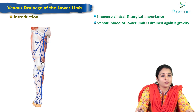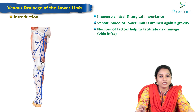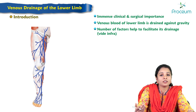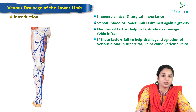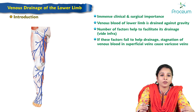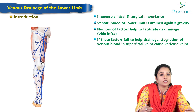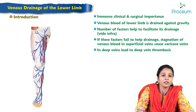The venous drainage of the lower limb is drained against gravity. However, there are a number of factors which help the drainage of venous blood, facilitating its drainage against gravity into the inferior vena cava. If these factors fail, stagnation of venous blood in the superficial veins causes varicose veins — meaning abnormal dilatation and tortuosity of the veins — while stagnation in the deep veins leads to deep vein thrombosis.